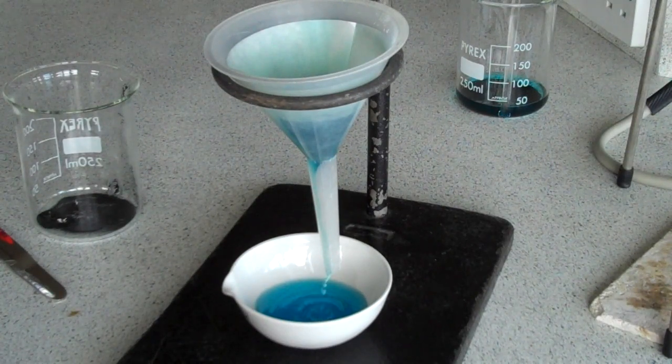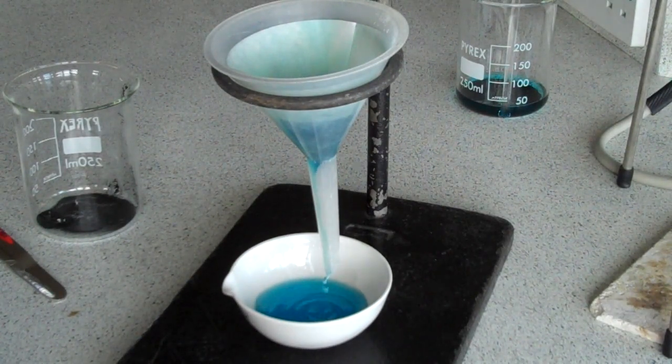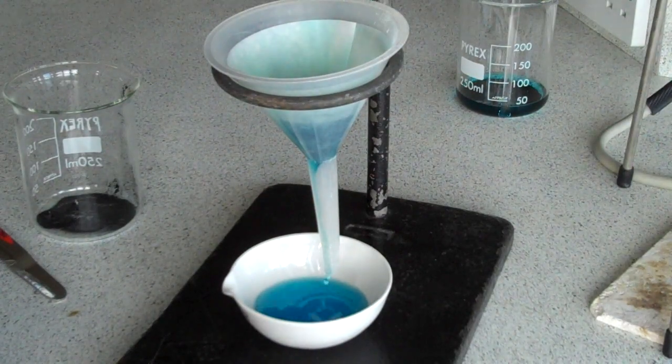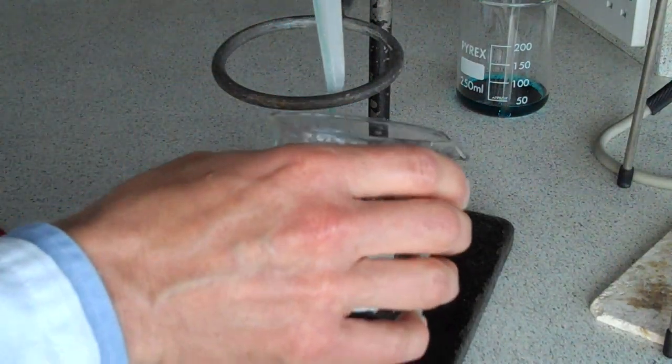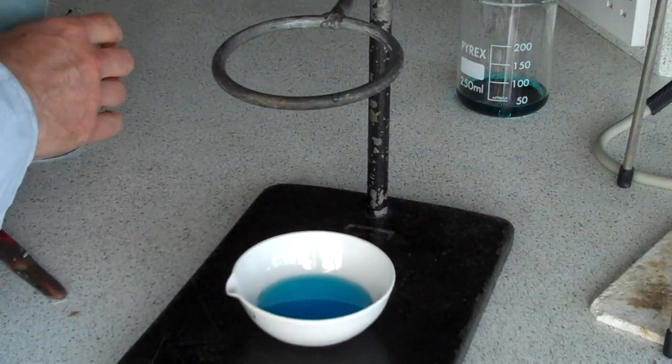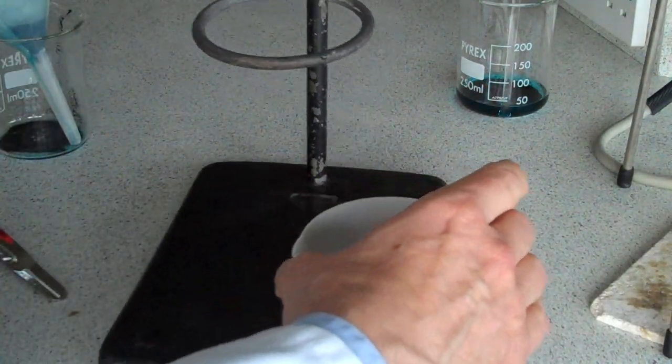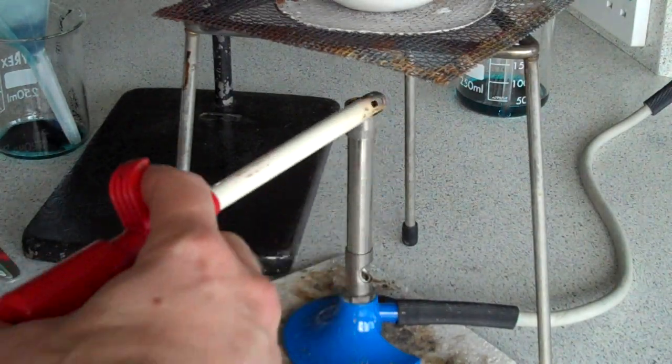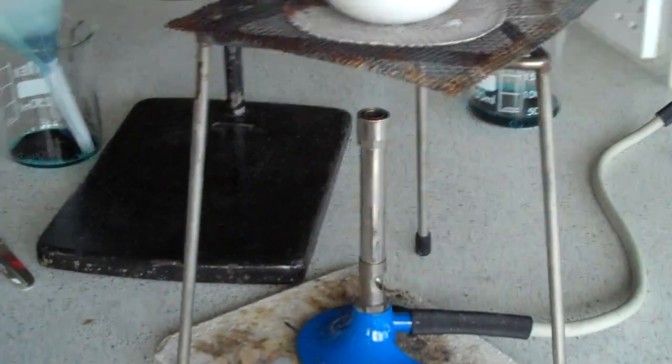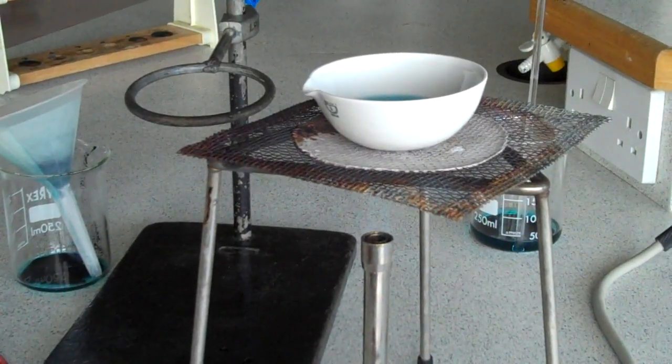Now, you could just leave it in a warm place, or to speed it up, as before, you can heat it with your Bunsen burner. So I'm just going to get rid of the filter. And here's my evaporating basin. Put it on a heatproof mat again. And away we go.